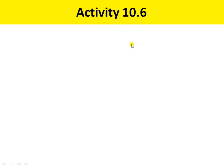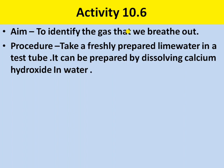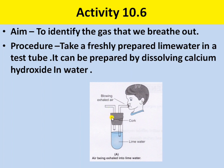Activity 10.6 aims to identify the gas that we breathe out. Take freshly prepared lime water in a test tube — it can be prepared by dissolving calcium hydroxide in water. Put a plastic straw into the test tube and blow through it. Is there a change in the appearance of the lime water? Explain this change based on what you learned about calcium hydroxide in Chapter 6.